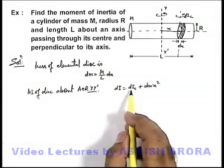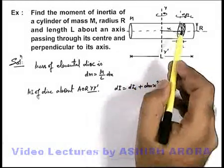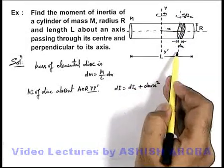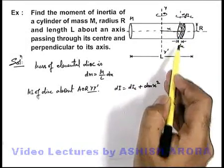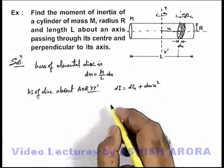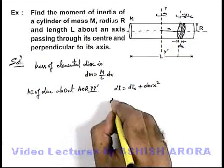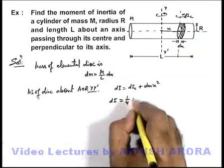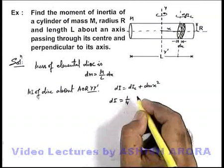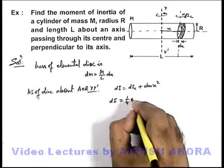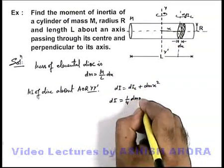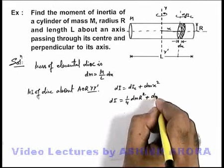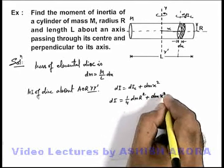Now dIc is the moment of inertia of the disc about this diametrical axis of rotation. We know that for a given disc, the moment of inertia about the diametrical axis is given by (1/4)mr². So dIc = (1/4)dm·r², and therefore dI = (1/4)dm·r² + dm·x².